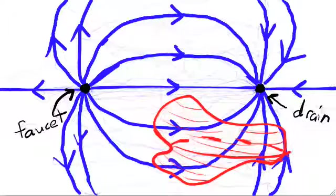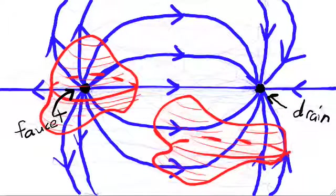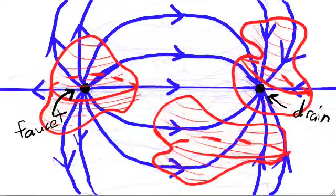Now I'll add a second surface which surrounds the faucet. Water which flows out of the faucet will eventually pass outward through the surface. The production of water in the interior of the surface leads to a net flux outward.